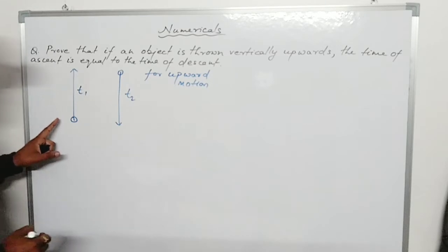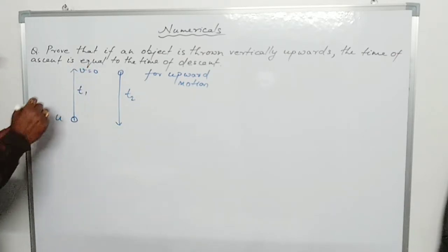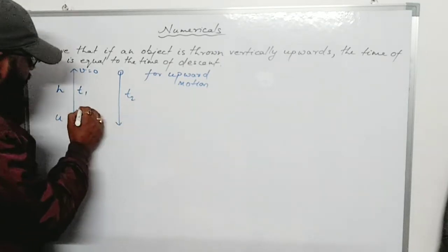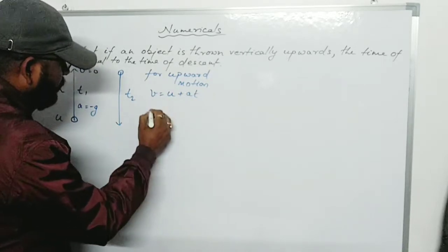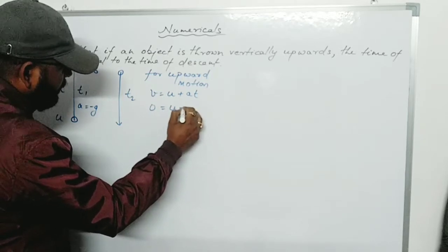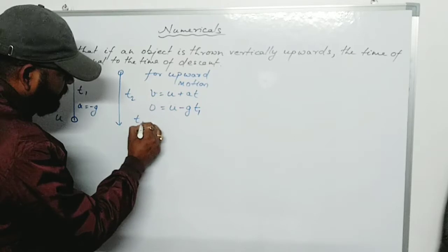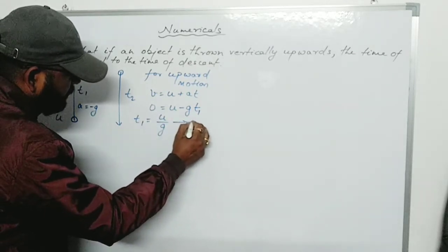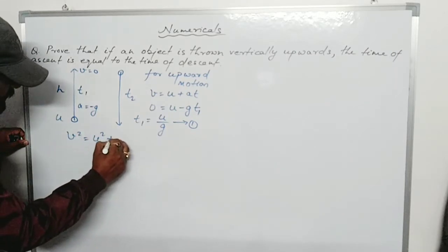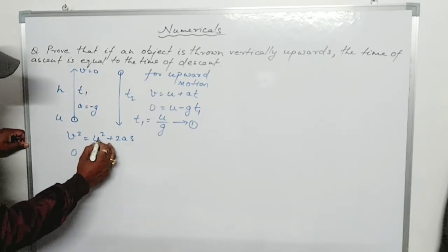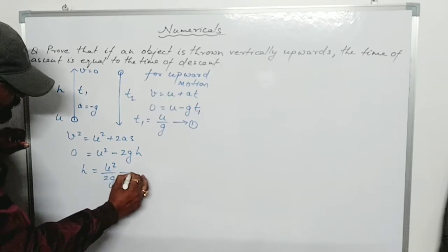For upward motion, acceleration is minus g m/s². Using V = U + at with V = 0 at maximum height: 0 = U − g·T1, giving T1 = U/g. This is equation 1. To find the maximum height H, use V² = U² + 2aS: 0 = U² − 2gH, so H = U²/(2g). This is equation 2.